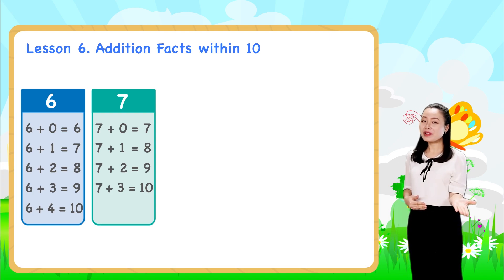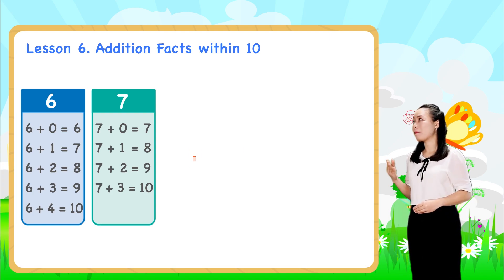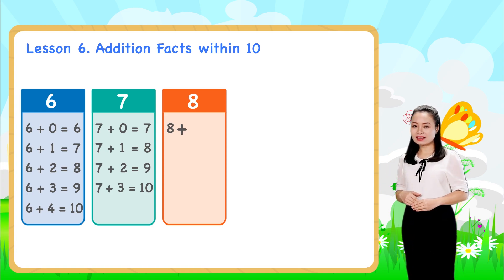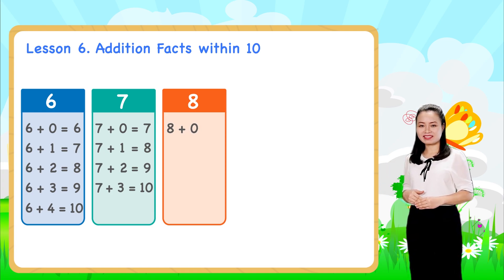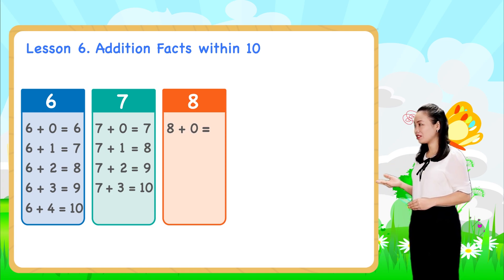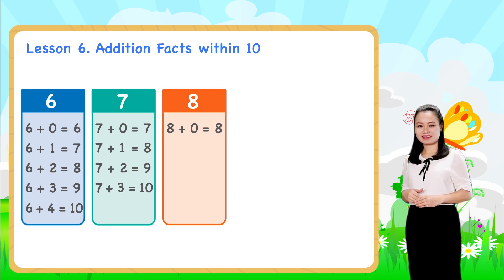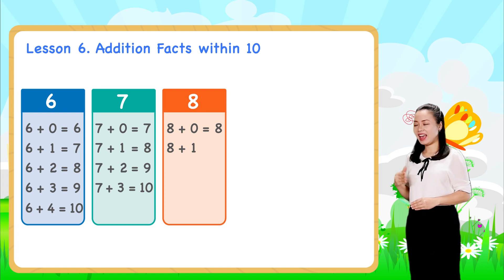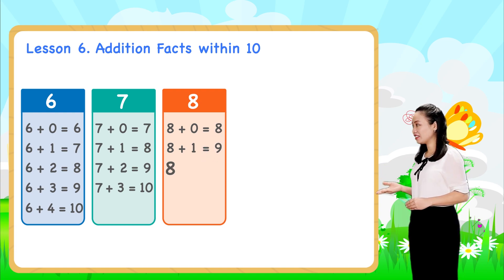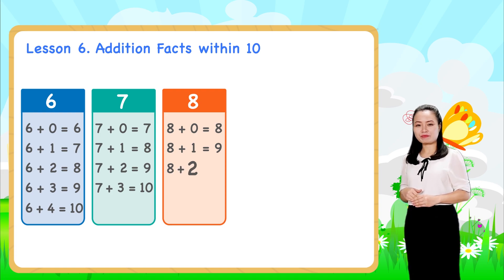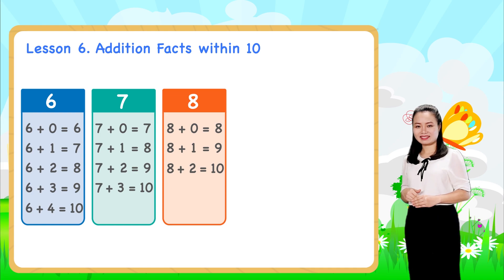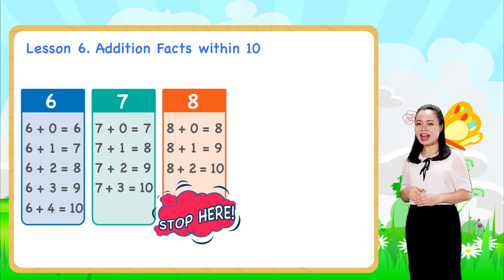Next, we learn addition by eight. Eight plus zero equals eight. Eight plus one equals nine. Eight plus two equals ten. We'll stop here for now.